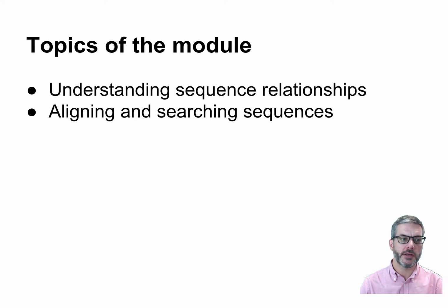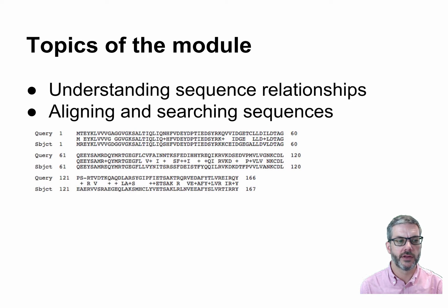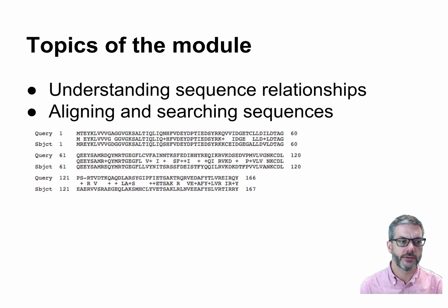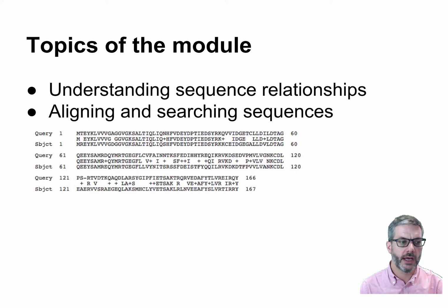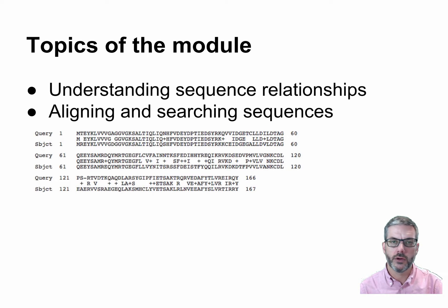Have you ever seen a sequence alignment? You've probably seen DNA and protein sequences. An alignment looks like this, and it is a way of showing how two sequences are related to each other. When you understand what alignments mean, how they are constructed, and how they are used, then you'll have the tools to ask deeper questions about sequence relationships.